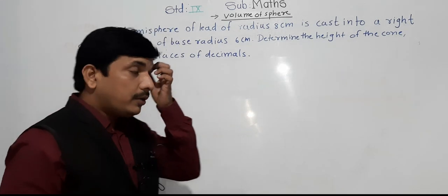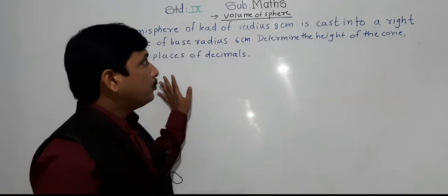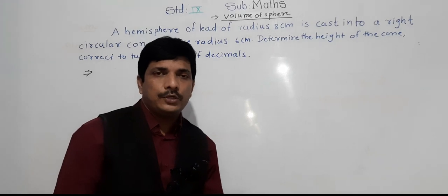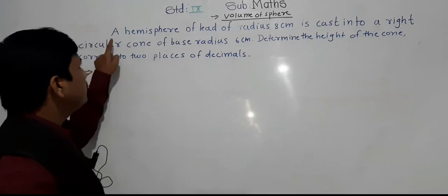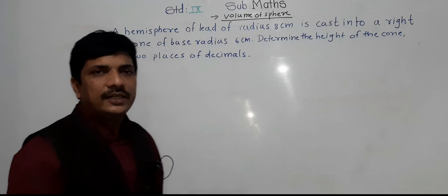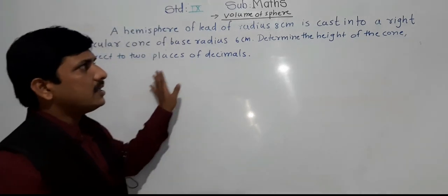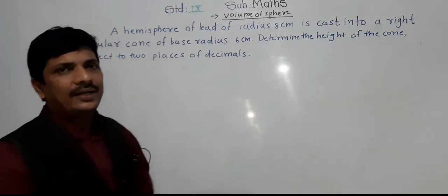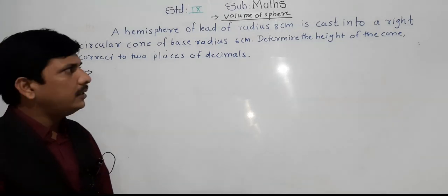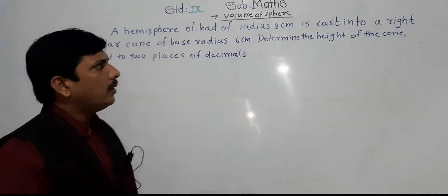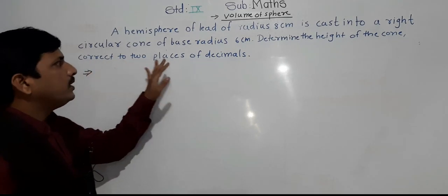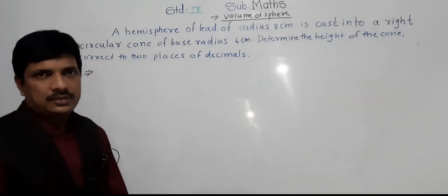Today we are going to solve some problems which depend on the volume of a sphere. The first problem: a hemisphere of lead of radius 8 centimeter is cast into a right circular cone of base radius 6 centimeter. Determine the height of the cone, correct to two places of decimals.